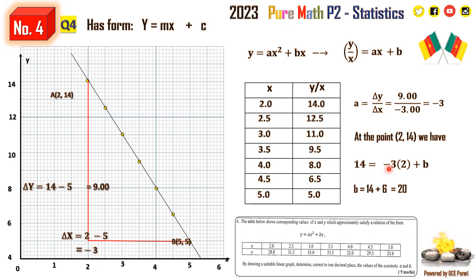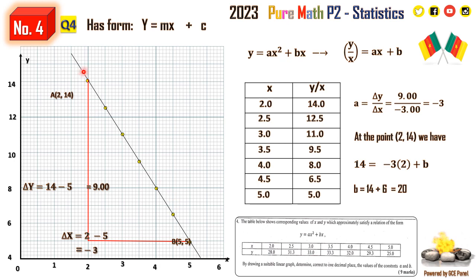Another approach a student might use is to take two points on this line, form two equations in terms of a and b, and solve those simultaneous equations to find the values of a and b.